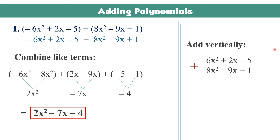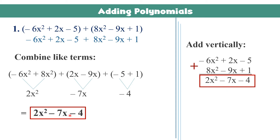You can start adding from the left or from the right — it doesn't matter, you will get the same answer. Combining negative 6 and positive 8 gives 2, copy x squared. Then positive 2 minus 9 gives negative 7x. For the constant, negative 5 plus 1 gives negative 4. We obtain the same answer. Whichever method is easier for you, both give the same result.